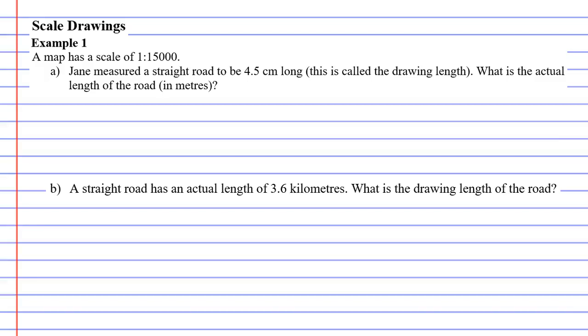In this video, we're going to look at example 1, and we're told that a map has a scale of 1 to 15,000, which means that everything you see in the map is 15,000 times larger in real life.